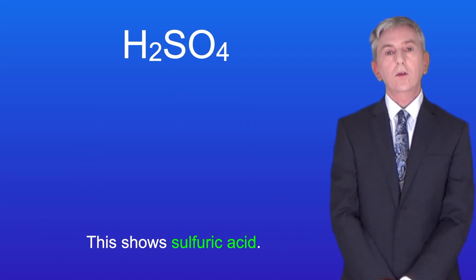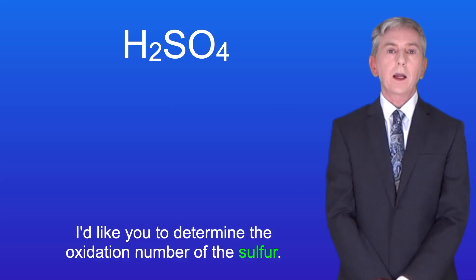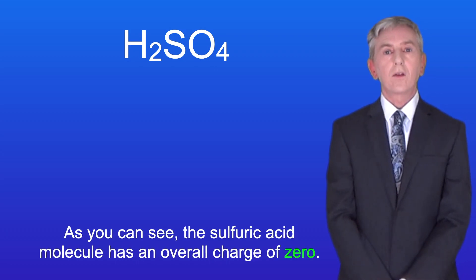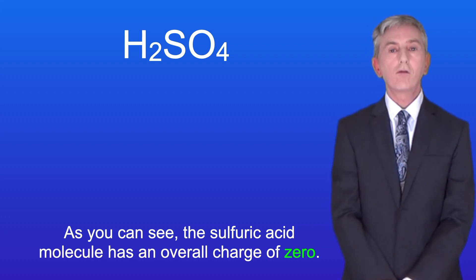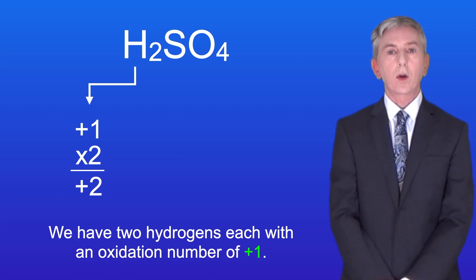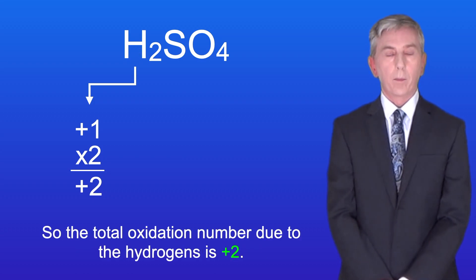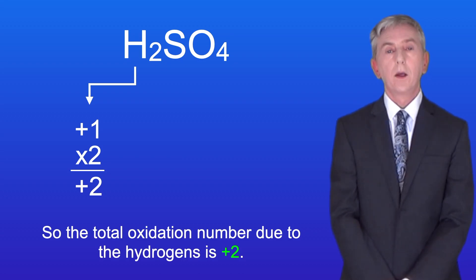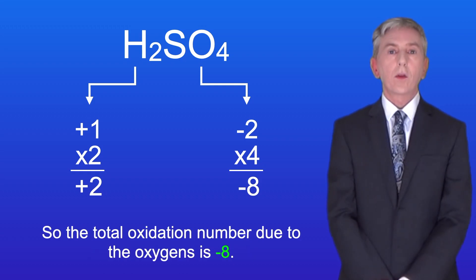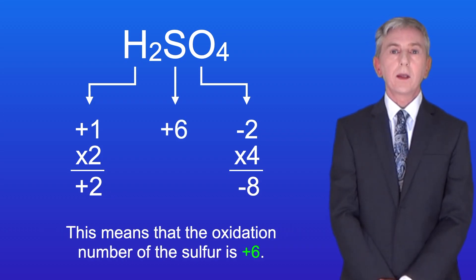Here's one for you to try. This shows sulfuric acid. I'd like you to determine the oxidation number of the sulfur — pause the video now and try this yourself. The sulfuric acid molecule has an overall charge of zero. We've got two hydrogens each with an oxidation number of plus one, so the total oxidation number due to the hydrogens is plus two. We've got four oxygens each with an oxidation number of minus two, so the total oxidation number due to the oxygens is minus eight. This means that the oxidation number of the sulfur is plus six.